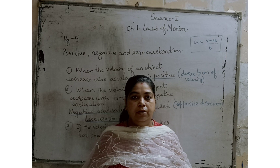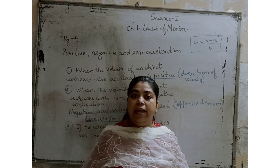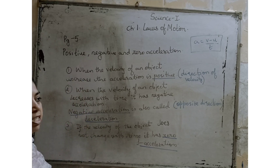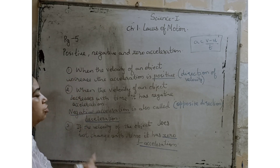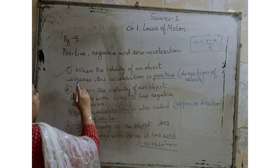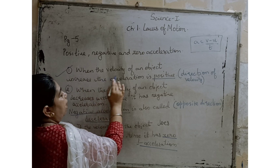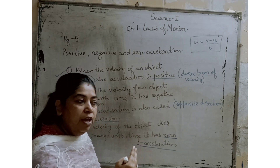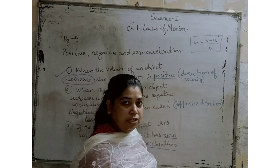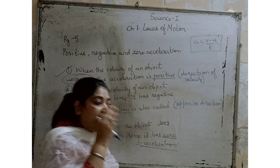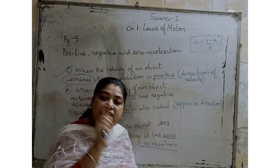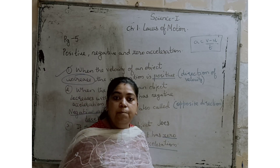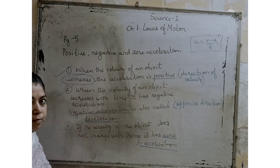Today we are going to study three more important definitions: positive acceleration, negative acceleration, and zero acceleration. The first definition is positive acceleration. When the velocity of an object increases, the acceleration is positive. Whenever the object moves in the direction of velocity, the velocity increases, and such acceleration is called positive acceleration.